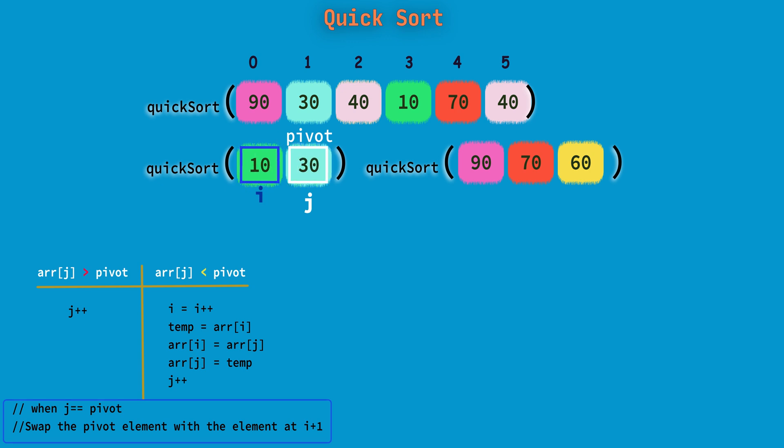Now again the same process for the right side partition or right subarray. Element j, 90, is greater than 60, so we will move j. Again 70 is greater than 60, again we will move j. Now j reaches to pivot. So we will move i to the first element and we will swap i and j.